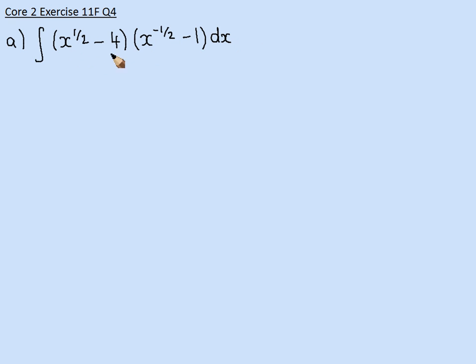So when we expand the brackets, x to the half times x to the minus 1 half, we add the power, so that gives us x to the zero, which is actually 1. Minus 4 times x to the minus 1 half gives us minus 4x to the minus 1 half. Minus 1 times x to the half is minus x to the half. And minus 4 times minus 1 is plus 4.